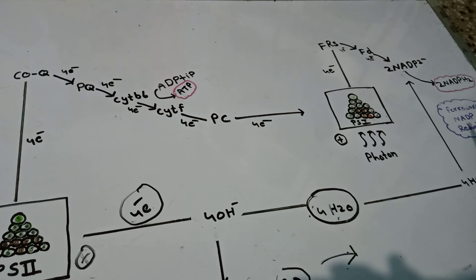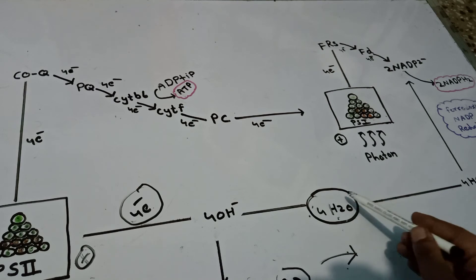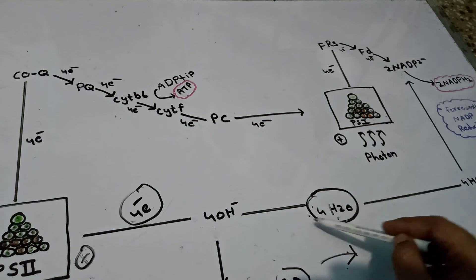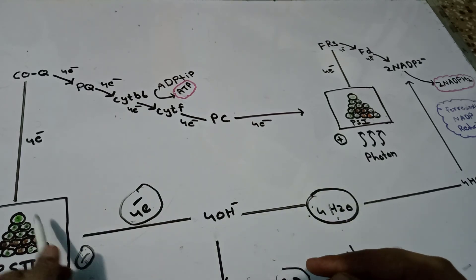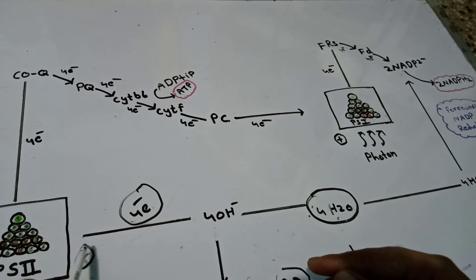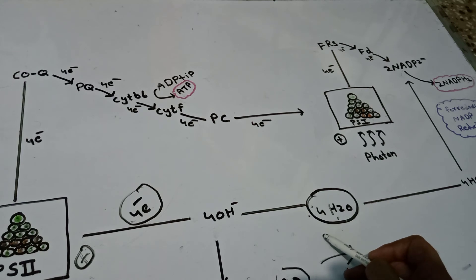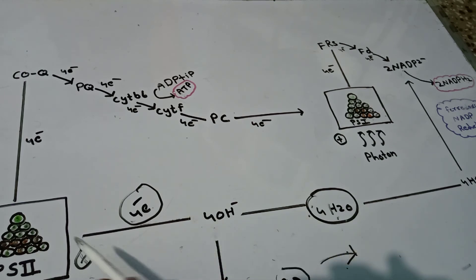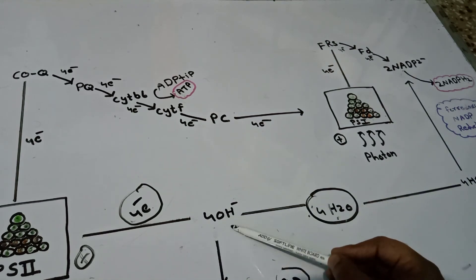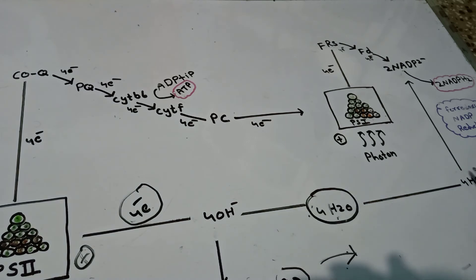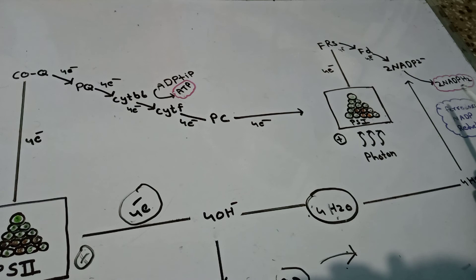Now let's see how NADP is converted into NADPH₂. There is a water molecule — H₂O. After ejecting its electron, Photosystem 2 is in a cationic or positive state. This positive state of Photosystem 2 helps in the photolysis of water, splitting the water molecule into 4 hydroxyl ions, 4 electrons, and 4 protons. These 4 protons help in the formation of two NADPH₂ molecules, mediated by the enzyme ferredoxin-NADP reductase.